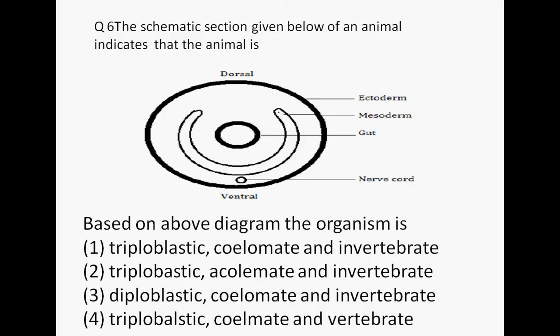Question six involves a diagram showing dorsal and ventral sides with a ventral nerve cord. A ventral nerve cord identifies an invertebrate. The diagram also shows ectoderm, mesoderm, and endoderm (gut), meaning it is triploblastic. Narrowing to the first or second option, and checking for coelom: any space lined by mesoderm is a coelom. Since mesoderm has a space, the answer is triploblastic, coelomate, invertebrate — the first option.